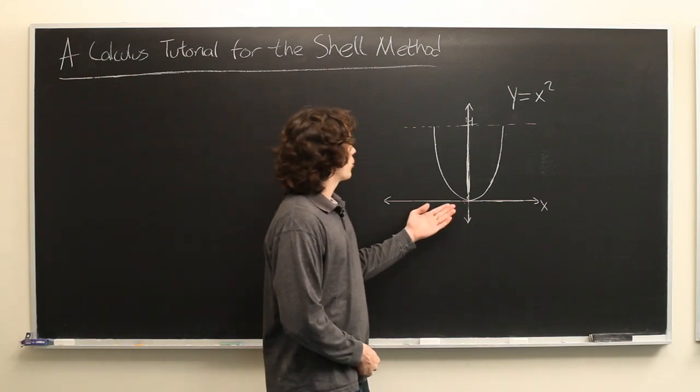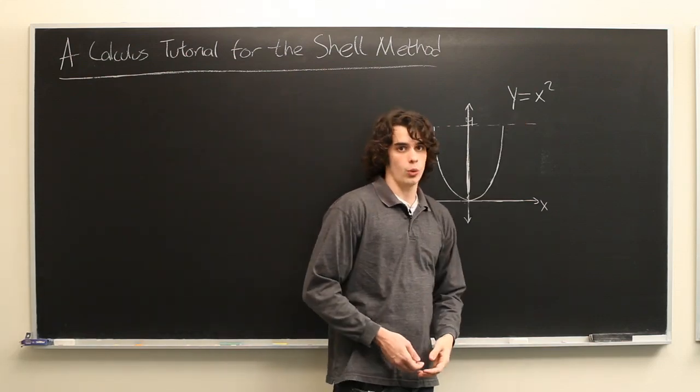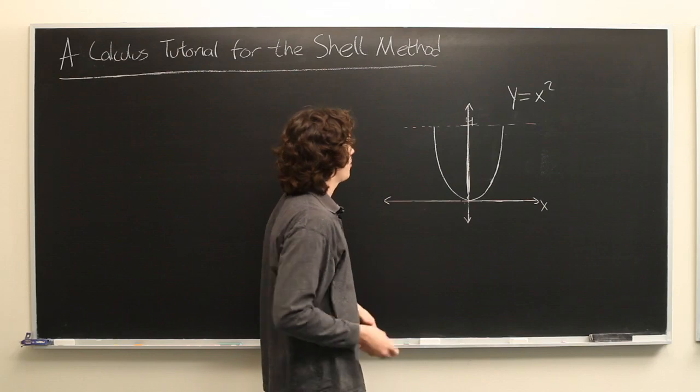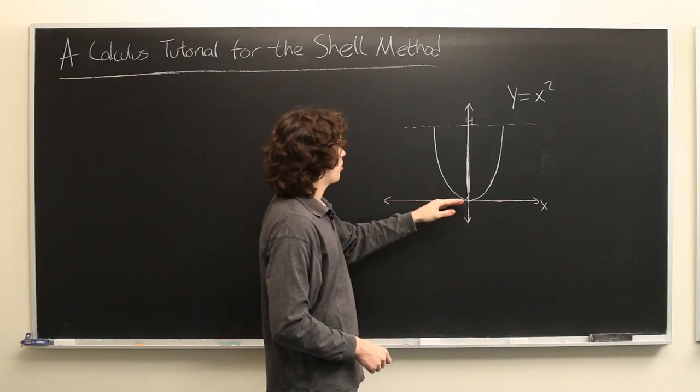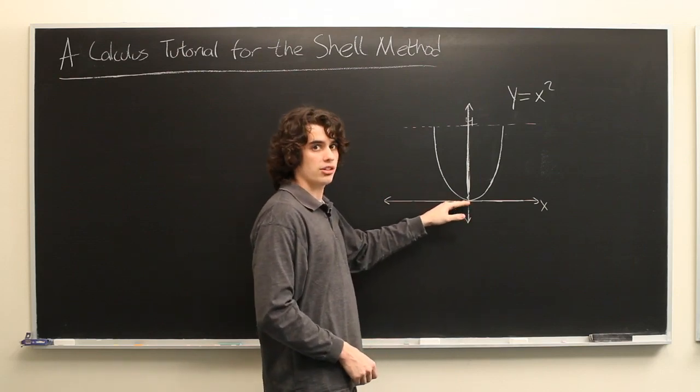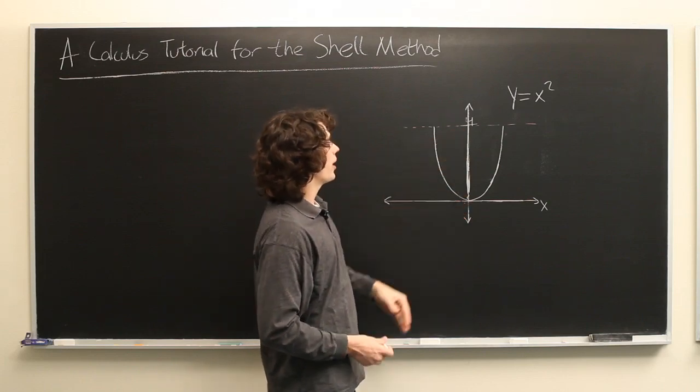Here we have the graph of the function y equals x squared, a familiar parabola. What we're concerned with is the portion of this graph that lies between the x-axis and the line y equals 4.